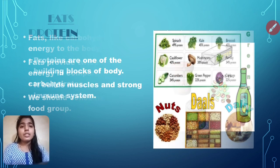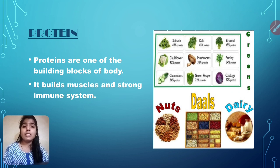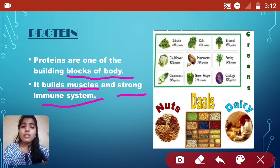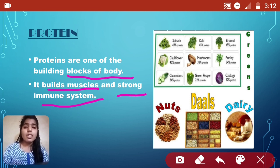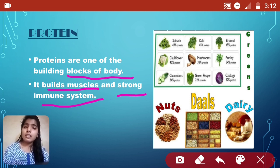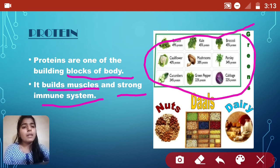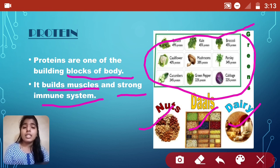Next nutrient is protein. Proteins are one of the building blocks of the body. Proteins build muscles and a strong immune system. Immune system means our immunity, which helps us fight against disease. If we don't get protein in our food, we are not able to fight against disease and will become sick, so we should eat protein in our daily diet. We get protein mainly from green vegetables, nuts, dals, and dairy products like milk, ghee, and cheese.